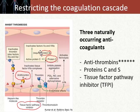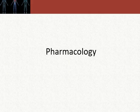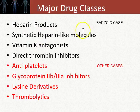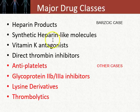That was a quick 10 to 12 minute overview of the physiology of coagulation. Let's go now into the pharmacology. There are several drug classes that affect the coagulation cascade pathway. We're going to focus on four of them for this case. We're going to talk about heparin molecules, as well as heparin-like or synthetic heparin molecules. We'll also talk about vitamin K...